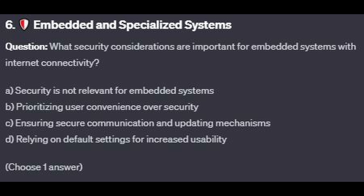For question number 6: what security considerations are important for embedded systems with internet connectivity? Is it A: security is not relevant for embedded systems? Is it B: prioritizing user convenience over security? Is it C: ensuring secure communication and updating mechanisms? Or is it D: relying on default settings for increased usability? Choose one answer.